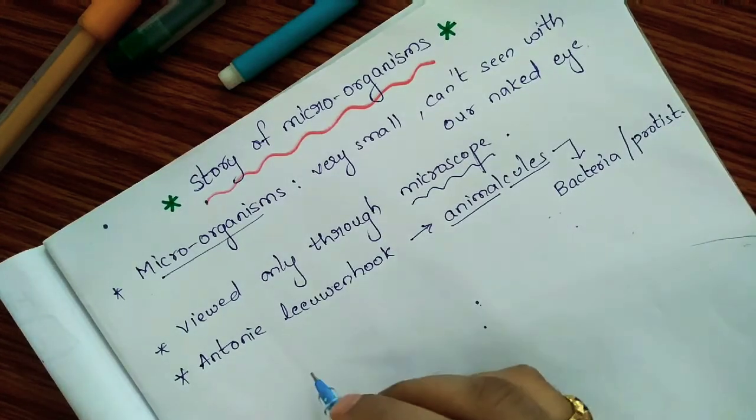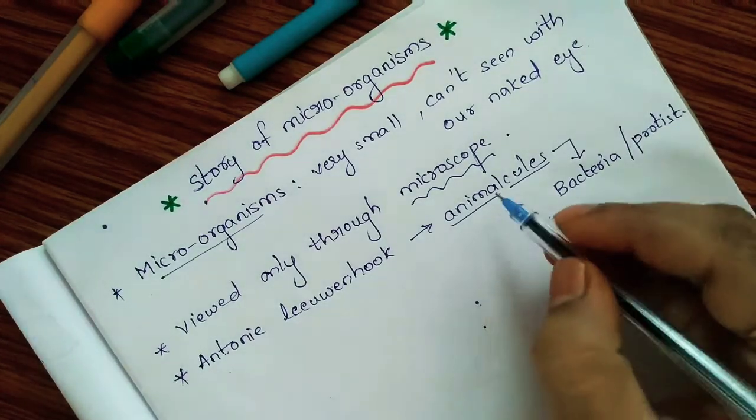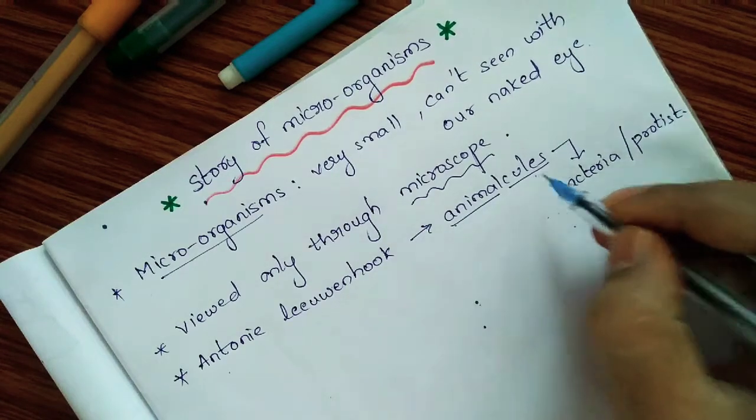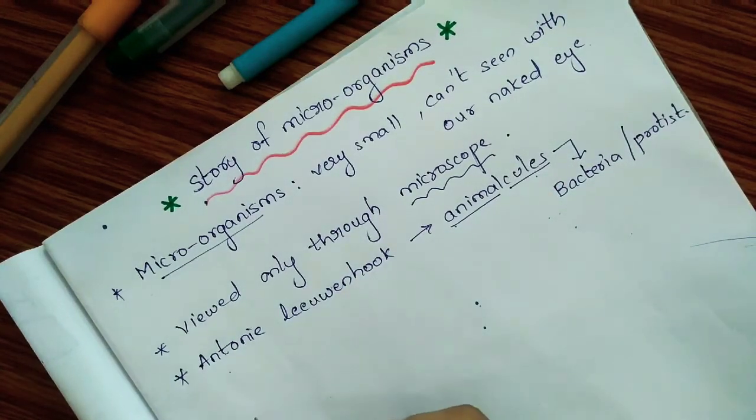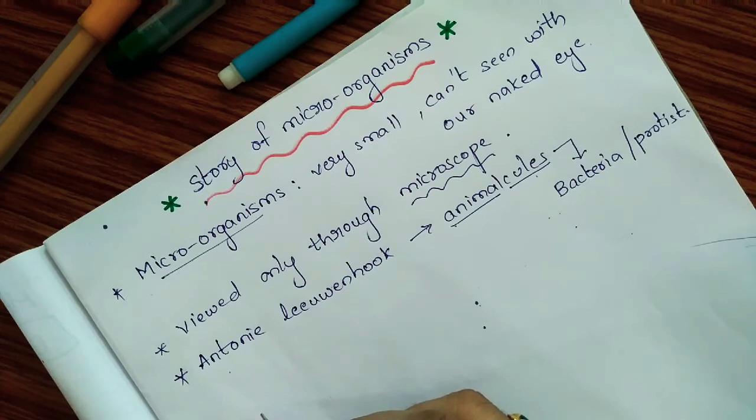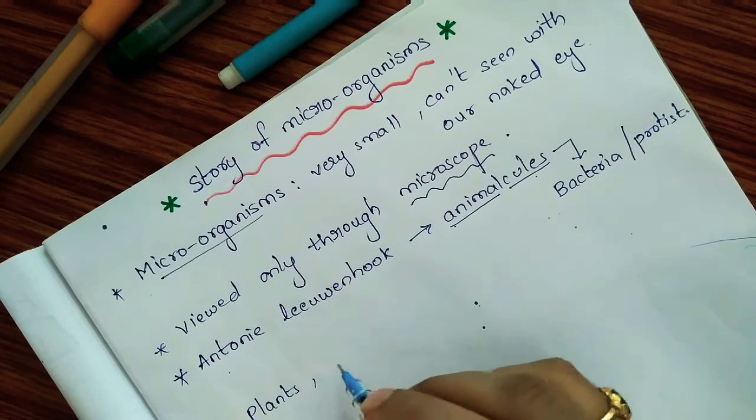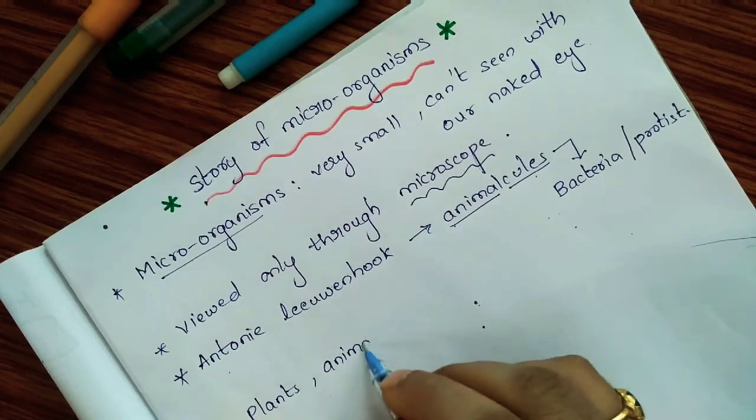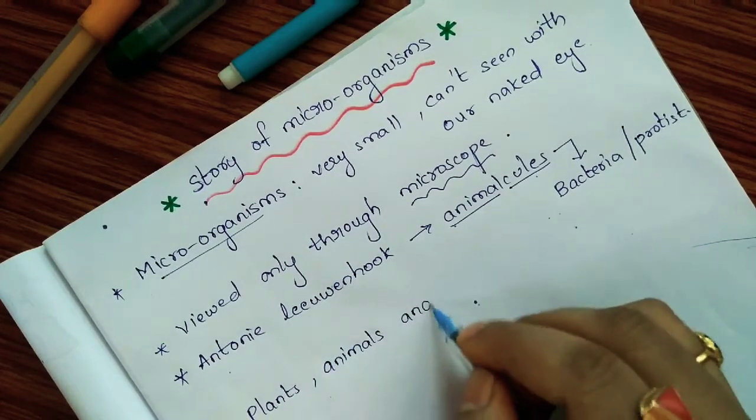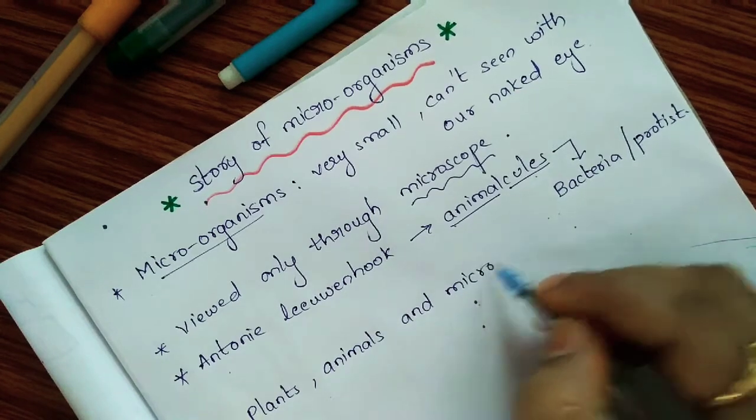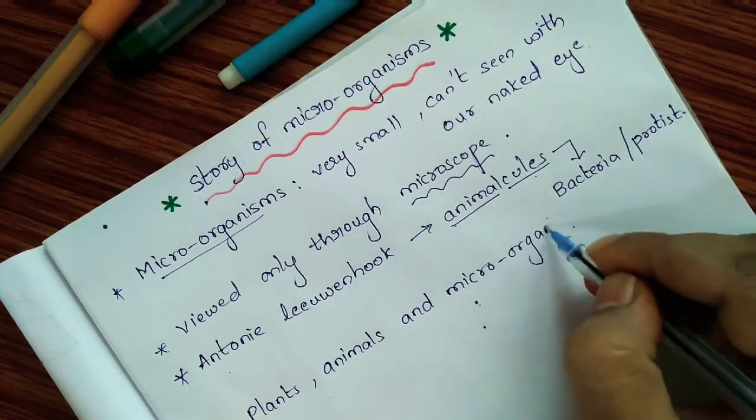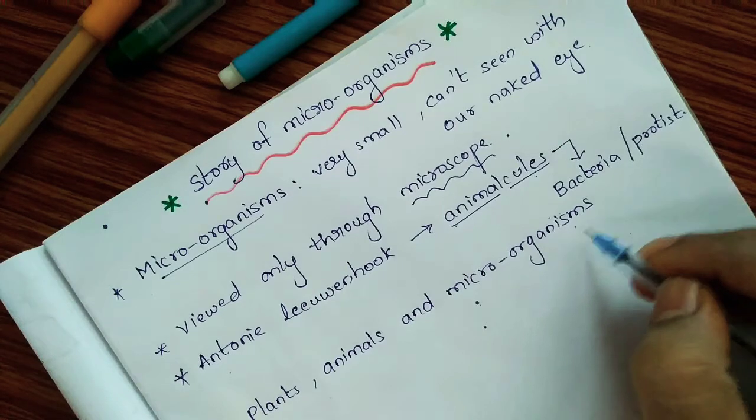Only after the discovery of these animalcules, the world came to know that there are three types of living organisms. Besides plants and animals, the world came to know the existence of another living creature: microorganisms.